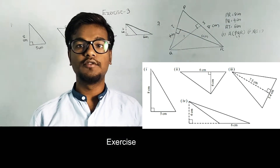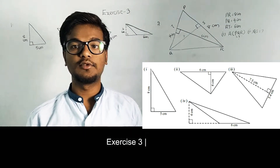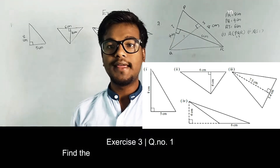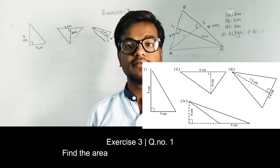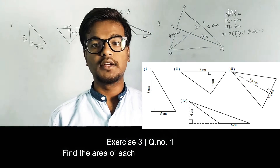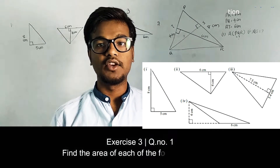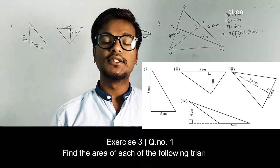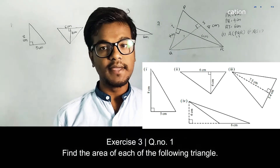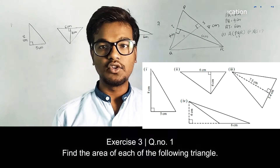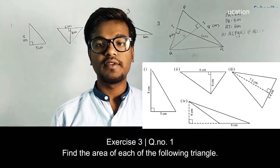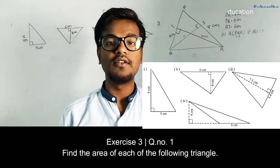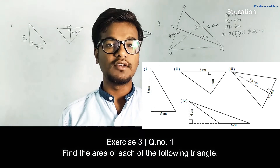In this video we are going to discuss the solutions for Exercise 3, first question. They are asked to find the area of given triangular shapes. The formula for area of a triangle is half into base into height. Here they have given the base and height, so we simply substitute the values into that formula.